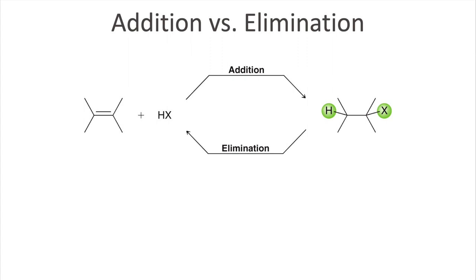Now let's take a further look at the reaction itself. The addition reaction we learn in this chapter is basically the reverse reaction of the elimination reaction we learned in the alcohol halide chapter. These two reactions are in equilibrium, and which side is favored depends on temperature. Addition reactions are favored at low temperatures, whereas the elimination reaction is favored at elevated temperatures.